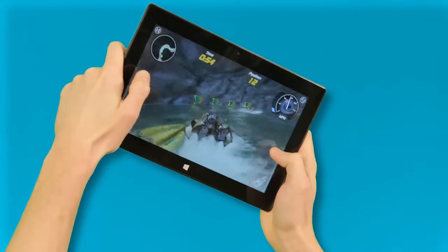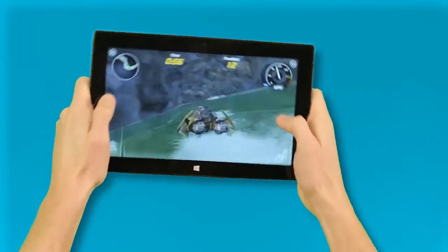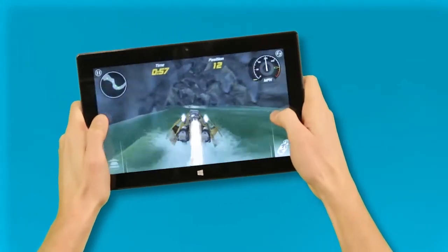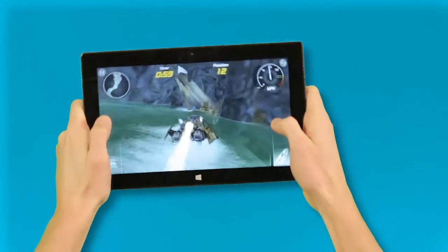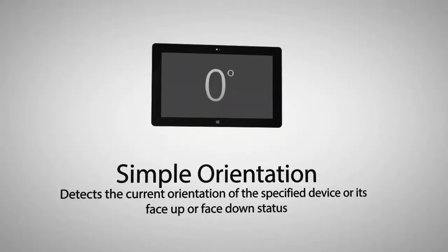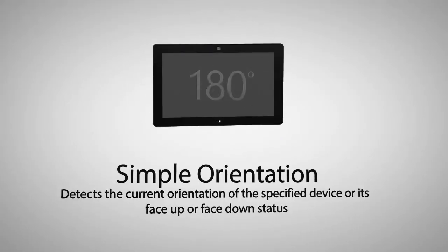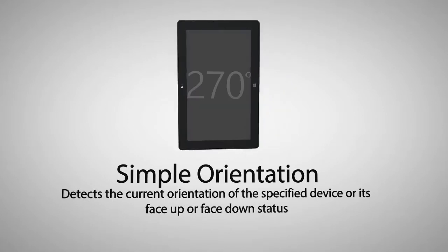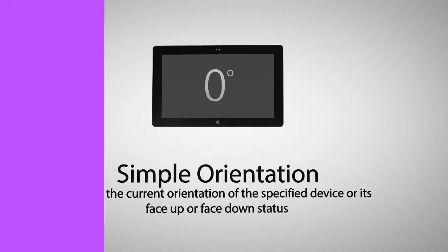A typical use for this is a racing game, where you need precise response to the movement of the device. And finally, the simple orientation sensor, which detects the current orientation of the specified device or its face-up or face-down status.